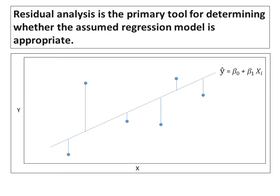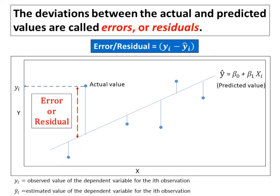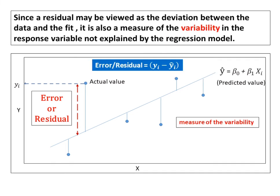The deviations between the actual and predicted values are called errors or residuals, where y sub i is the observed value of the dependent variable for the ith observation, and y hat sub i is the estimated value of the dependent variable for the ith observation. Since a residual may be viewed as the deviation between the data and the fit, it is also a measure of the variability in the response variable not explained by the regression model.